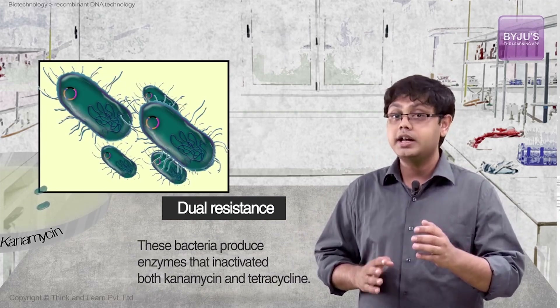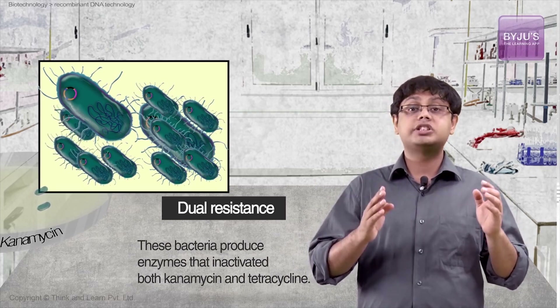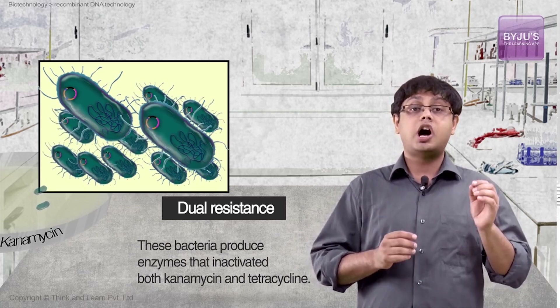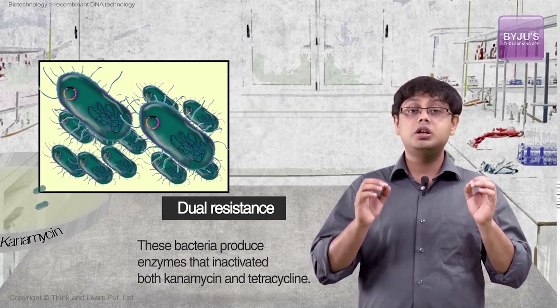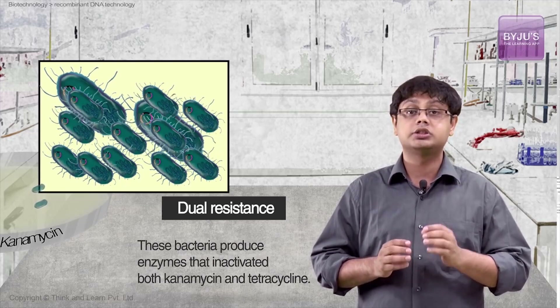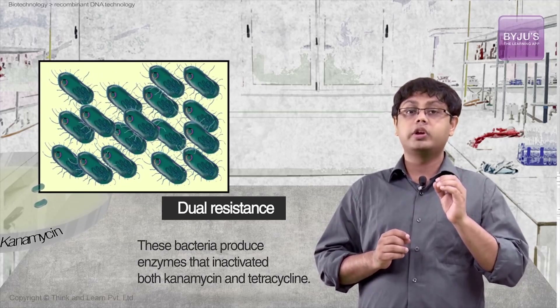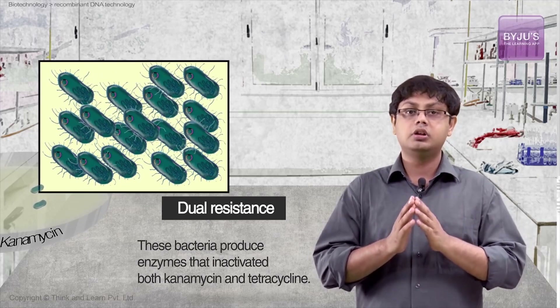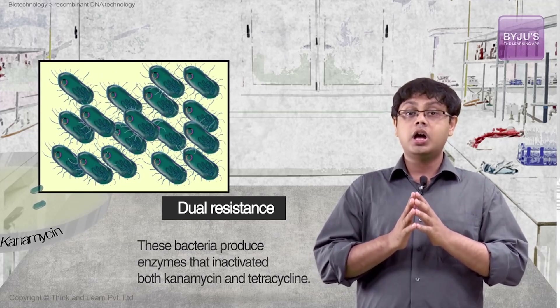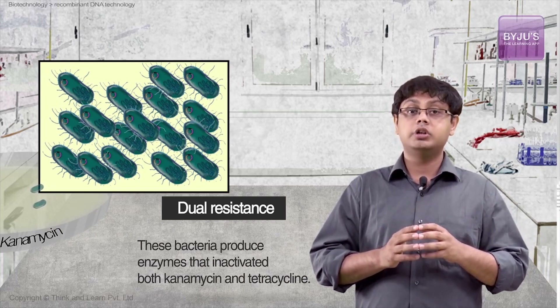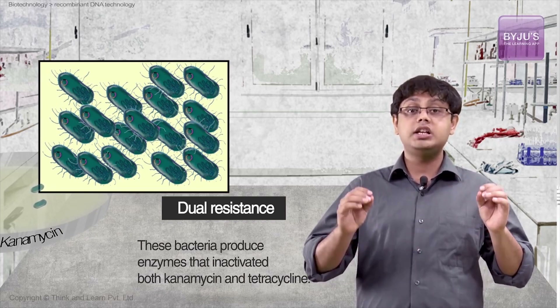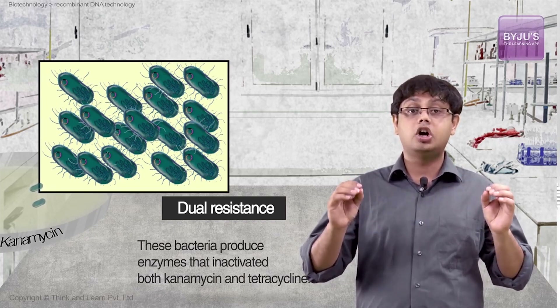The surviving bacteria proliferated to form cell colonies of about 100 million identical offspring, all carrying the new recombinant DNA plasmid. A clone had been formed — a group of genetically identical organisms. The eureka moment in genetic engineering.